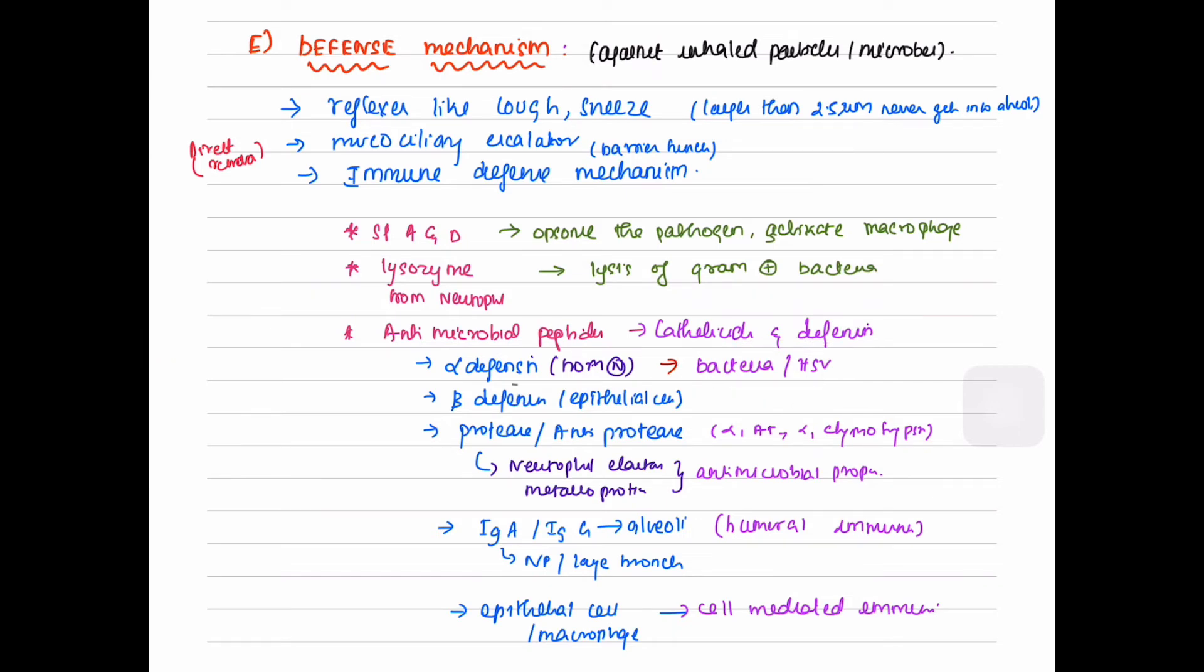The proteases like neutrophil elastase and metalloproteinases have antimicrobial properties. Immunoglobulins like IgA and IgG play a major role in humoral immunity, and epithelial cells and macrophages play an important role in cell-mediated immunity.